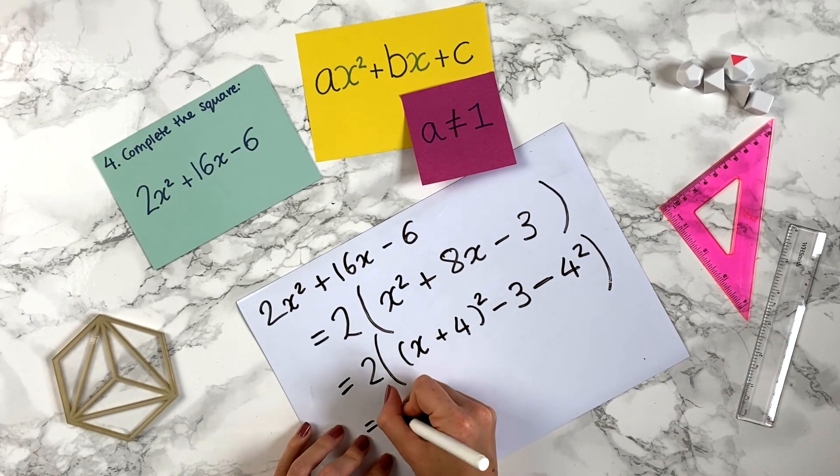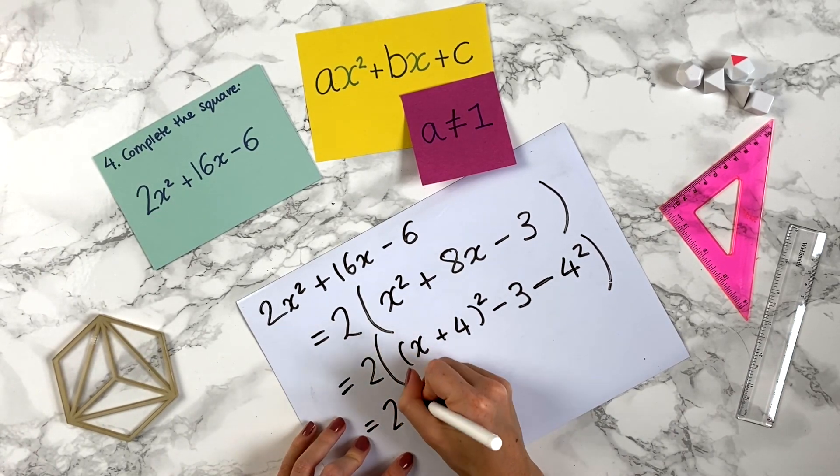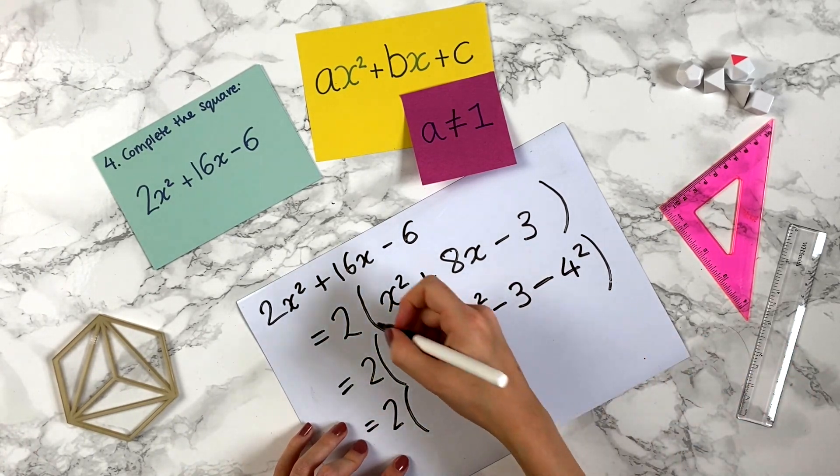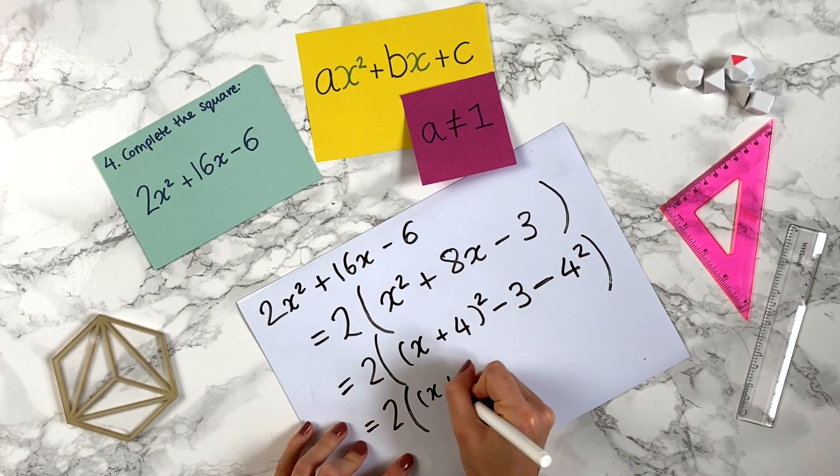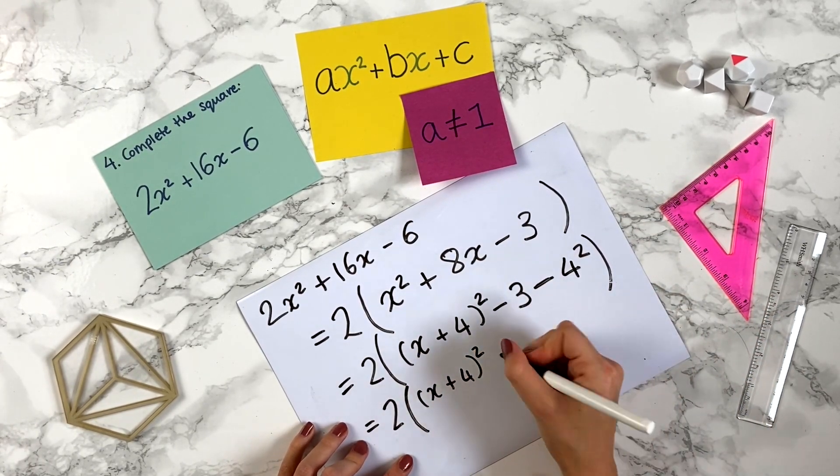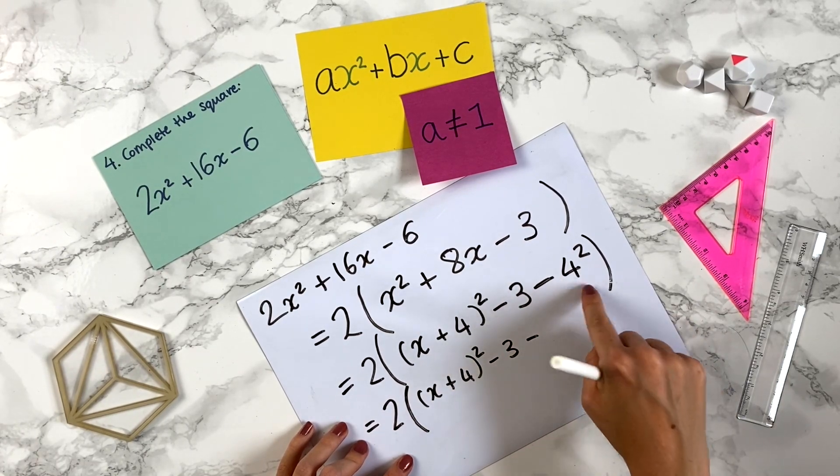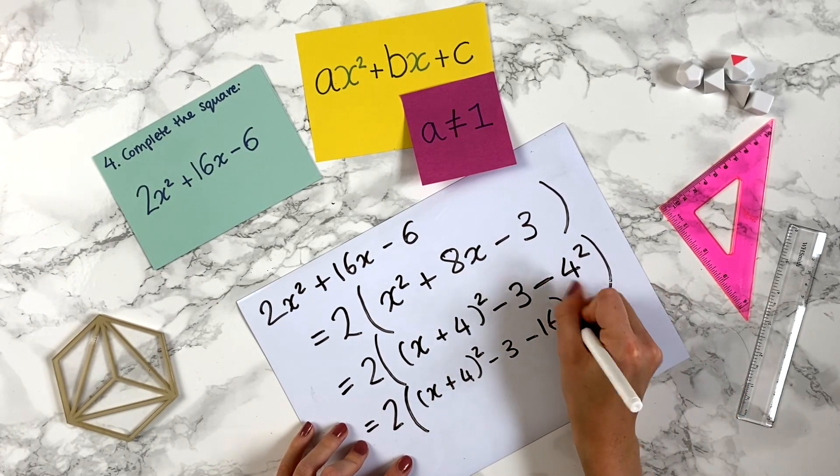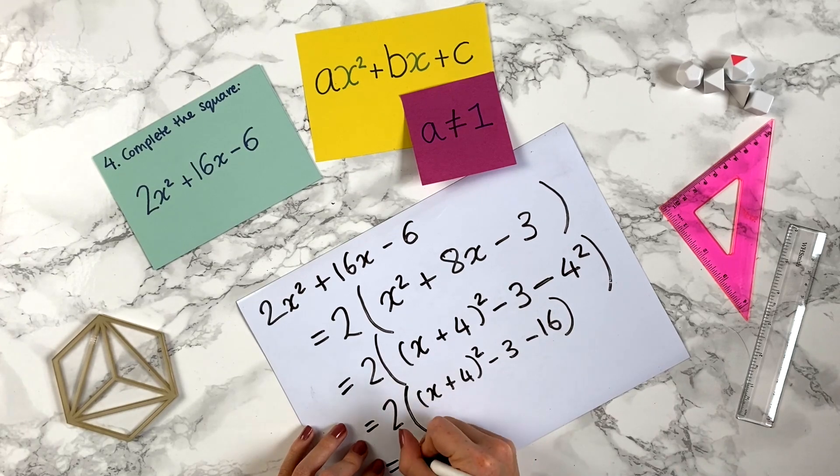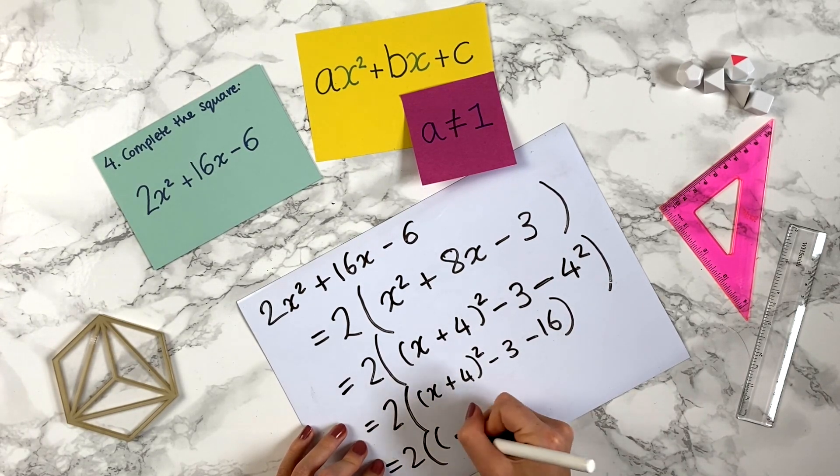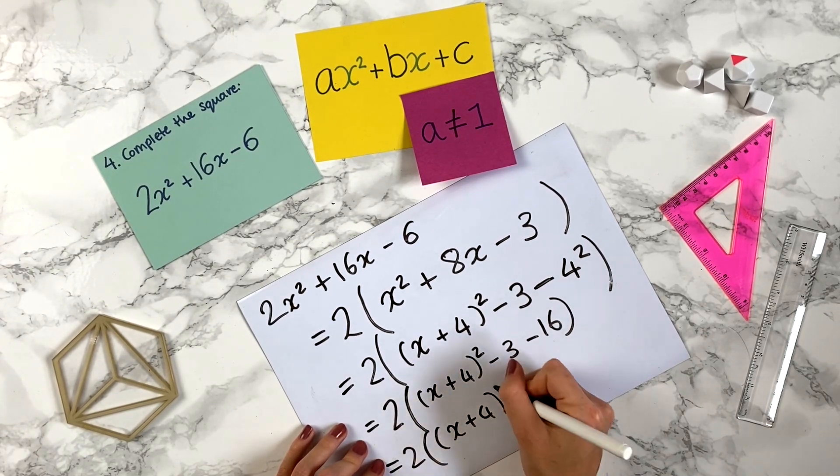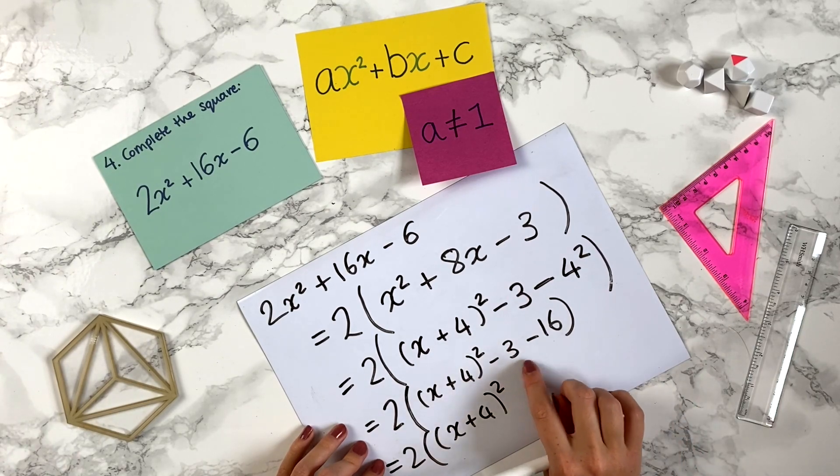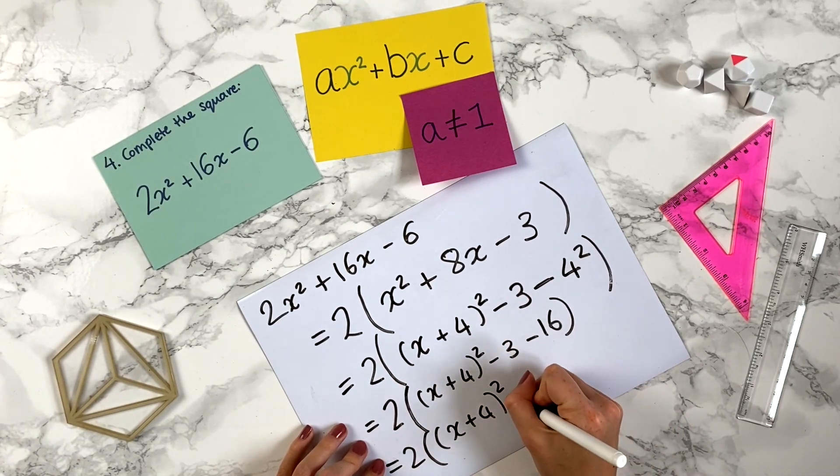So this equals, remember there's 2 always outside, so this bracket is over everything. x plus 4 squared minus 3 minus 4 squared which is 16. This equals 2 lots, so I'm keeping this 2 out there for the moment. x plus 4 all squared minus 3 minus 16 so that's going to be minus 19.